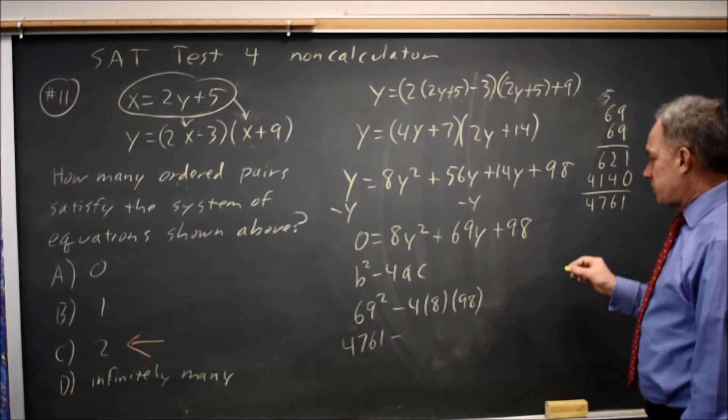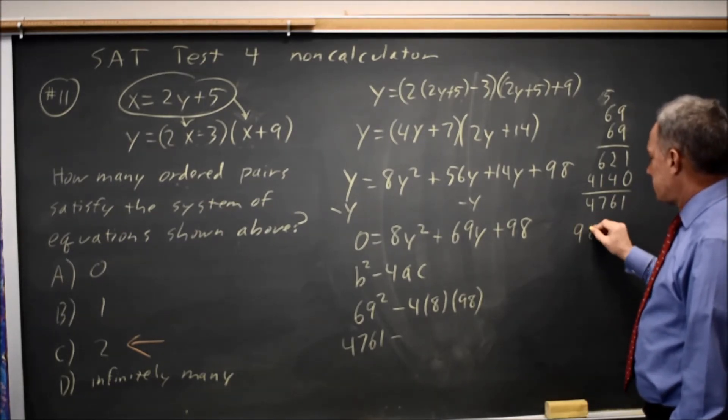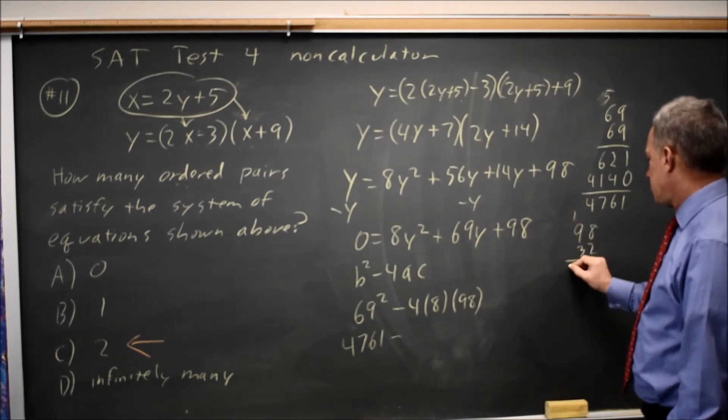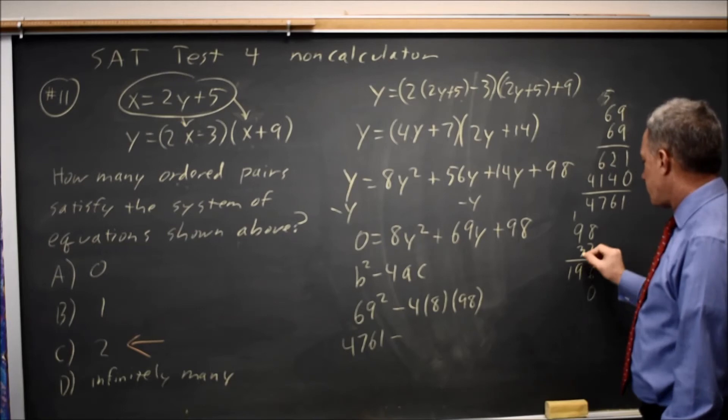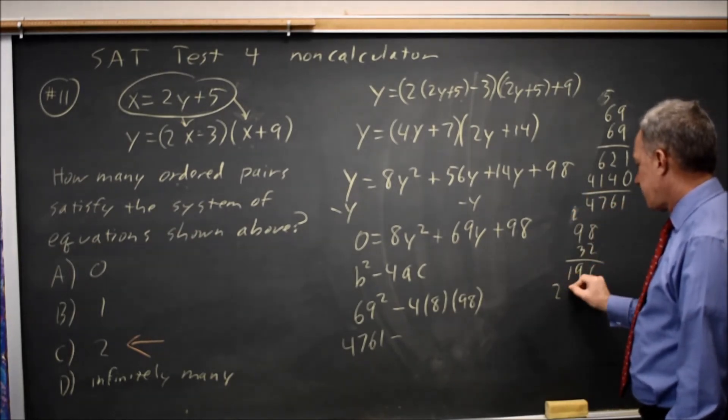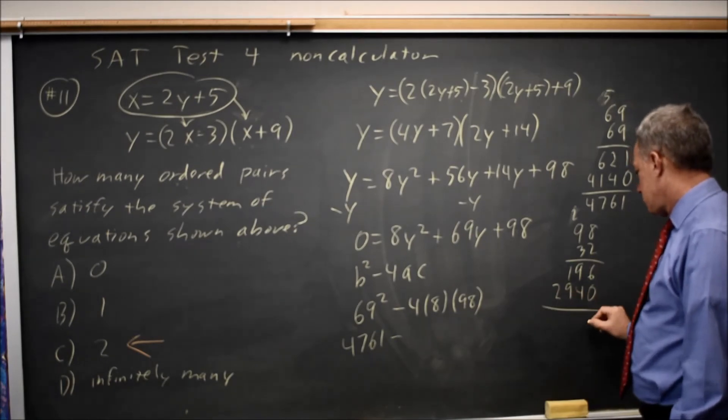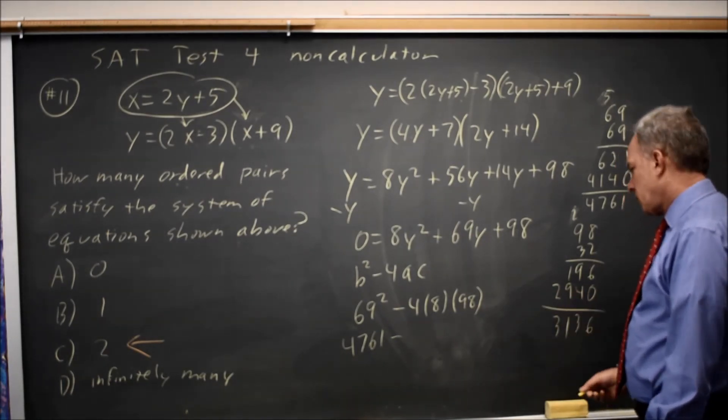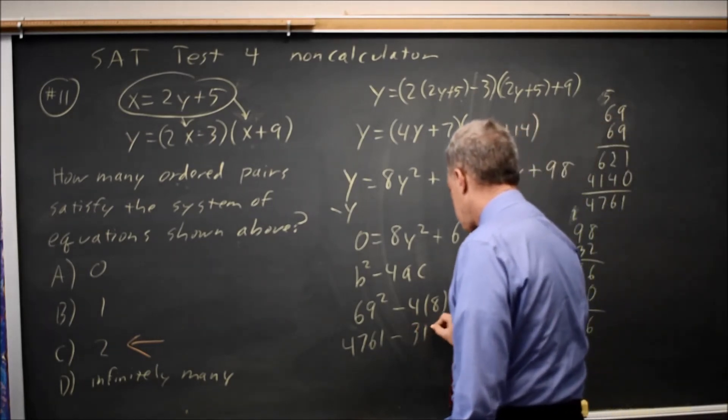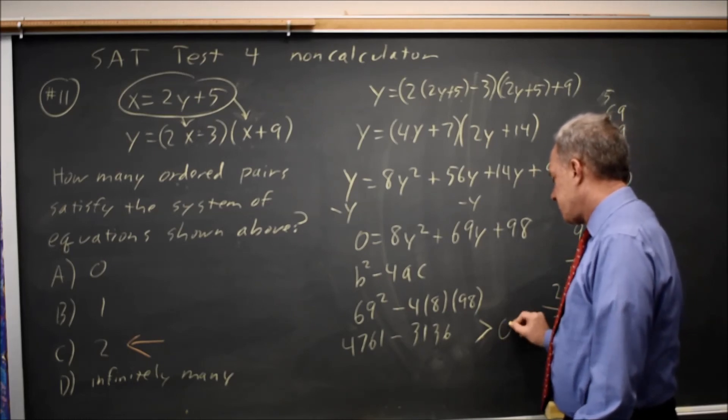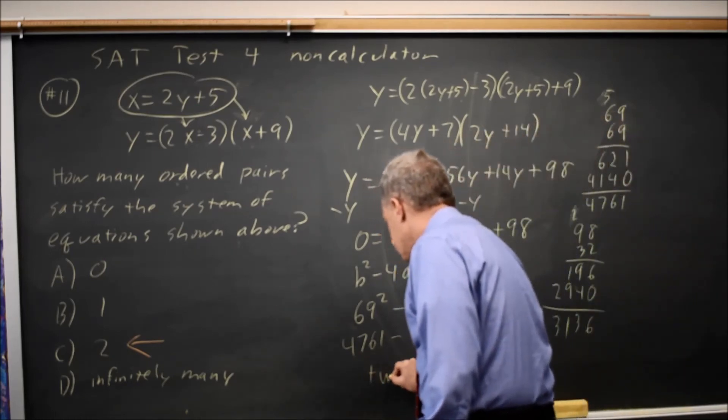4 times 8 is 32 times 98. 2 times 8 is 16, 19. 3 times 8 is 24. 3 times 9 is 27, 7. 3, 1, 3, 6. And 4, 7, 6, 1 minus 3, 1, 3, 6 is greater than 0. So we, in fact, have two solutions.